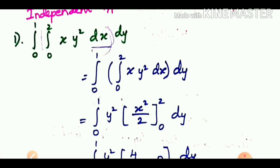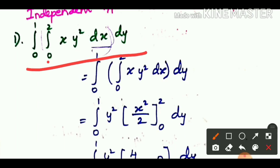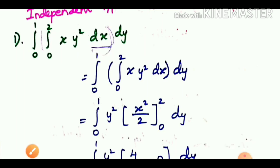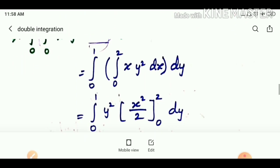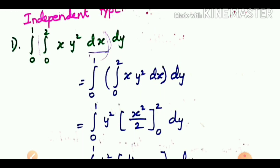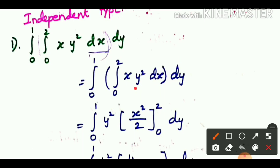Consider the double integral of x·y² dx dy. The question is how to use the x and y limits in the correct order. We integrate x first. Treating y² as a constant, we integrate x to get x squared divided by 2, using the rule: integrate x to the power n to get x to the power n+1 divided by n+1.